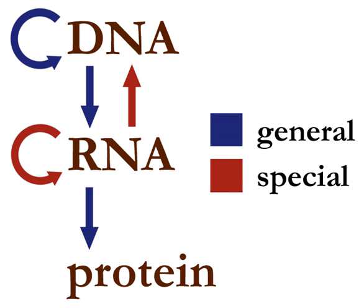Transcription is the process by which the information contained in a section of DNA is replicated in the form of a newly assembled piece of messenger RNA. Enzymes facilitating the process include RNA polymerase and transcription factors. In eukaryotic cells the primary transcript is pre-mRNA, which must be processed for translation to proceed. Processing includes the addition of a 5' cap and a poly-A tail to the pre-mRNA chain, followed by splicing.